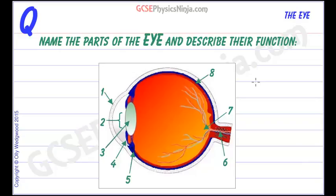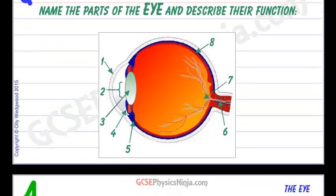Name the parts of the eye and describe their function. Here we have a cross-section diagram of a human eye with 8 parts that we need to describe. Let's go through the names to start with and then we'll describe what they do.